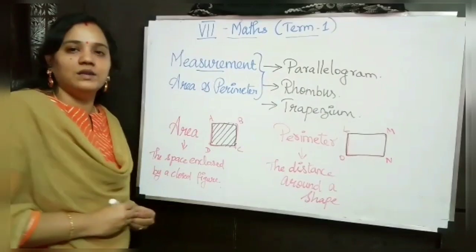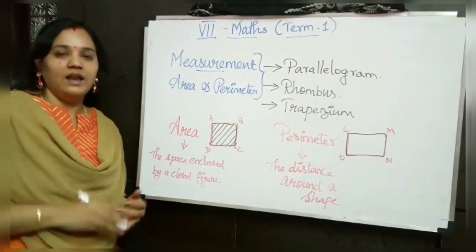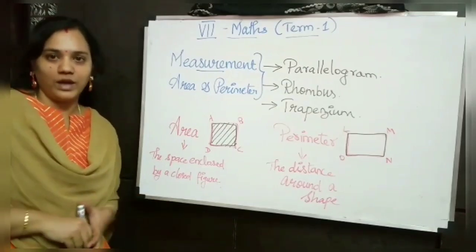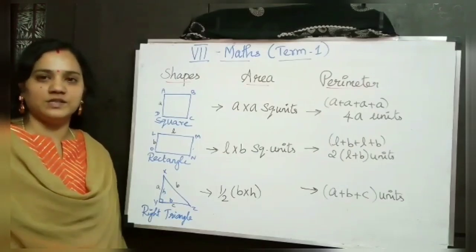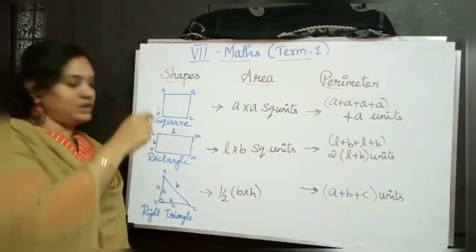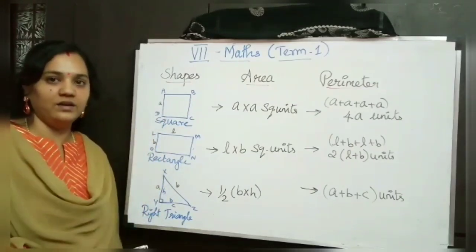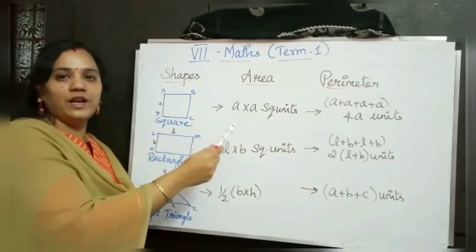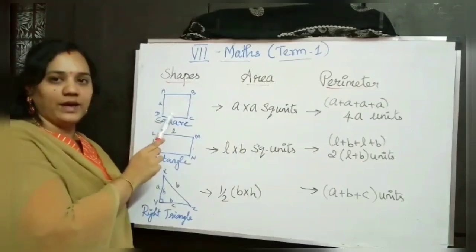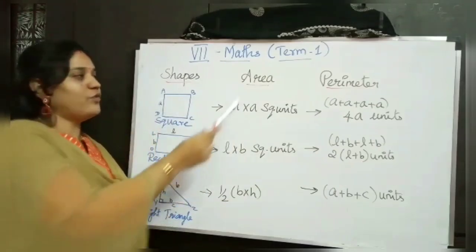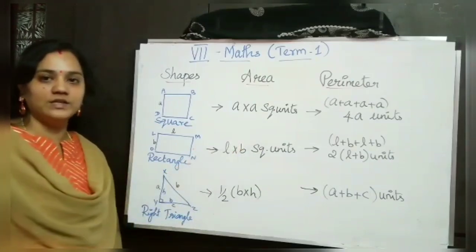You already learned the formulas for finding out area of square, rectangle and triangle — let us recall that now. We are going to recall the formulas you learned in sixth standard. I have drawn a square here with side A. The formula for finding out the area of the square is A into A square units.